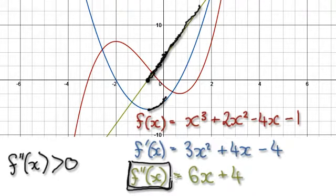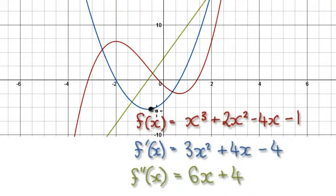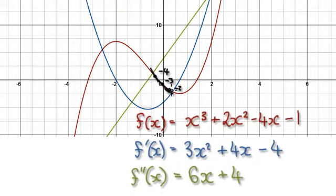If f double prime is greater than 0, it means that the gradient is always increasing. If the gradient is always increasing, it means that the original function — you can see why. If you look at this, let's say the gradient here is negative 4, and then the gradient here is negative 3. You can see the gradient is increasing. Let's say at this point the gradient is negative 2, so you can see it's always increasing.